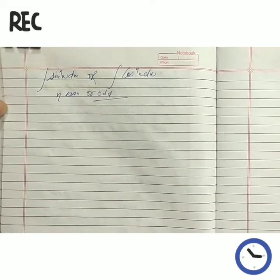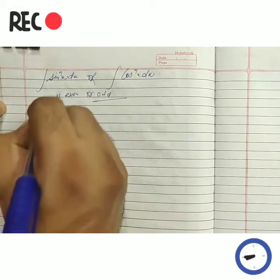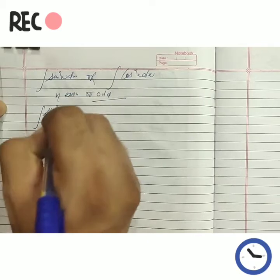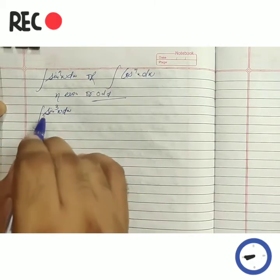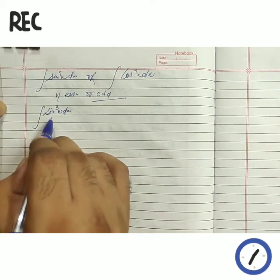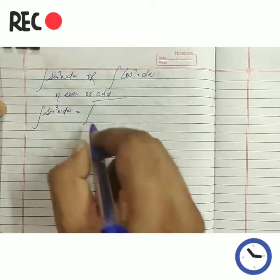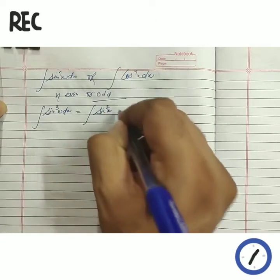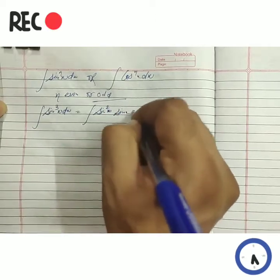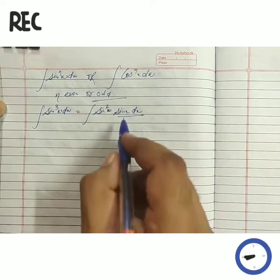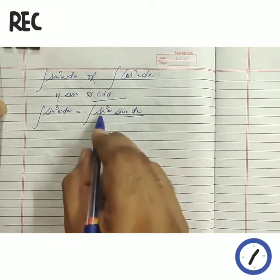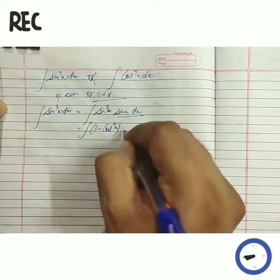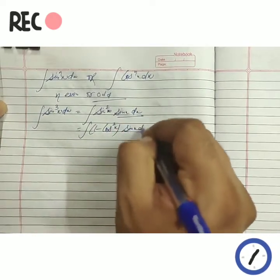First of all we are going to take here odd power of sine. Whenever we are having sine raised to an odd power like this. Previously we have done sine cubed theta can be integrated with the help of the sin 3θ formula, but we are going to discuss another method. Make one power separate in the case of odd power. This should be the derivative — the derivative of cosine is sine theta. So we are going to change the sine scale in the form of cos and sin x dx.